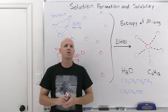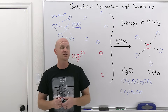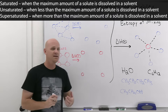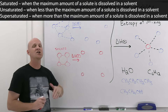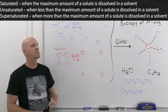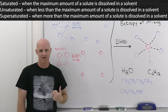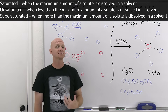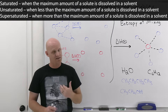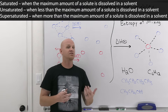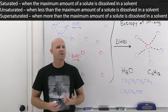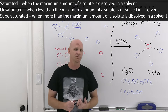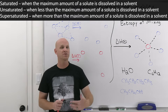A review of other vocabulary: saturated, unsaturated, and supersaturated. For any given solute and solvent combination, you're going to reach a limit to the maximum amount of solute that can be dissolved in that solvent. When you've reached that maximum, we say the solution is saturated. If you're below that maximum, it's unsaturated.